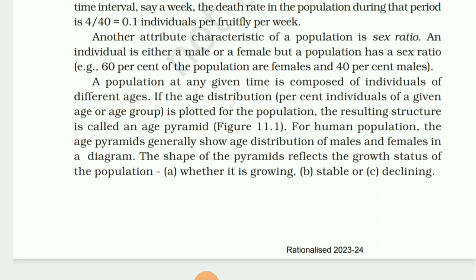Another attribute characteristic of a population is sex ratio. An individual is either male or female, but a population has a sex ratio — for example, 60% female and 40% male. A population at any given time is composed of individuals of different ages. When the age distribution is plotted for the population, the resulting structure is called an age pyramid. For human populations, the age pyramid shows age distribution of males and females, and its slope reflects whether the population is growing, stable, or declining.